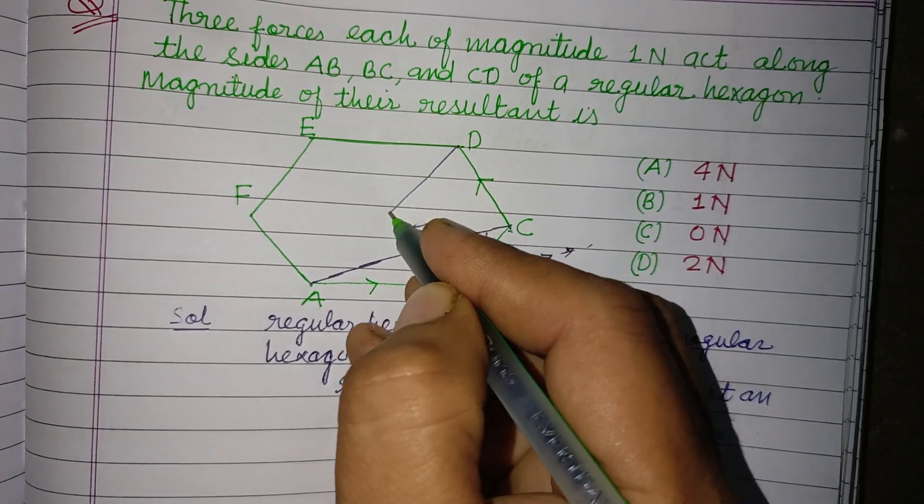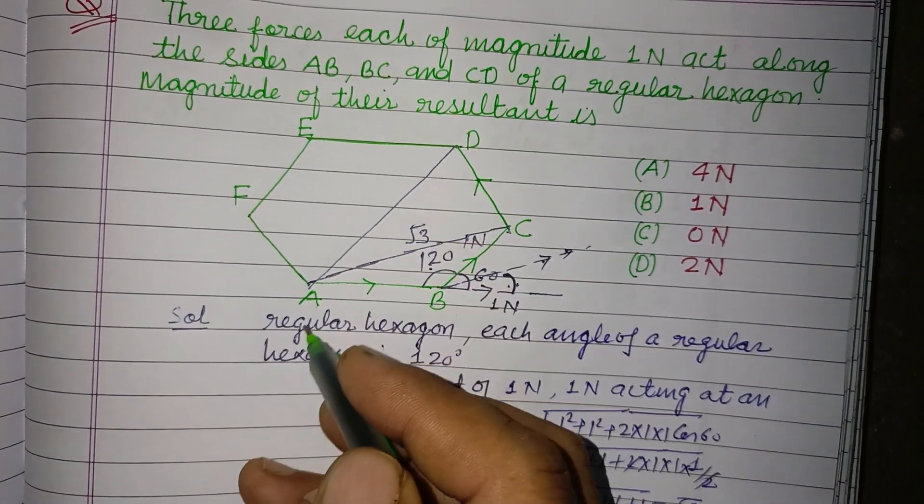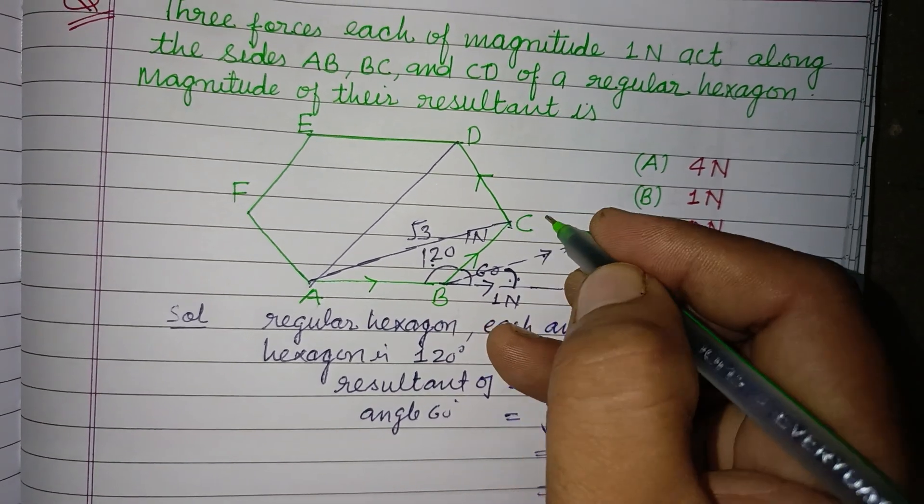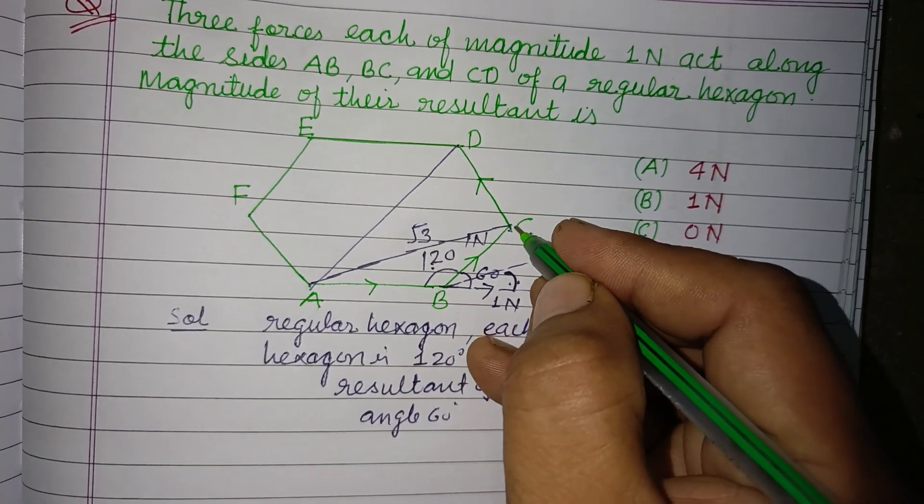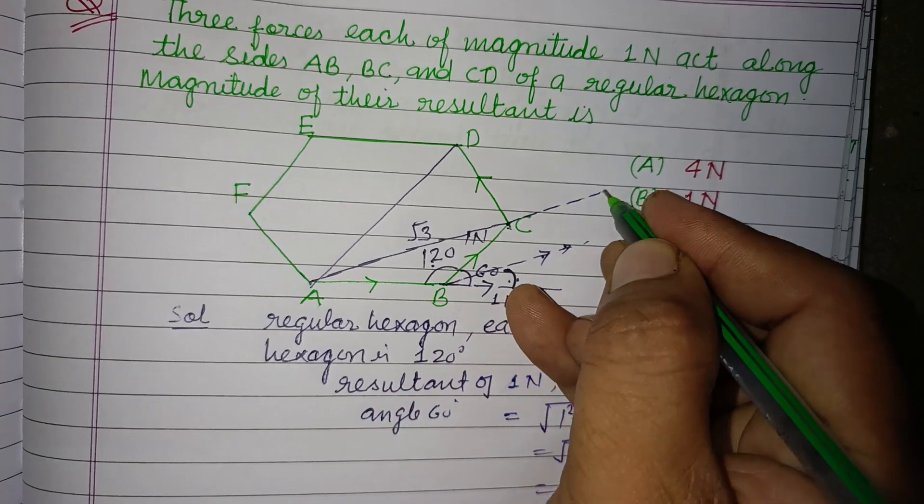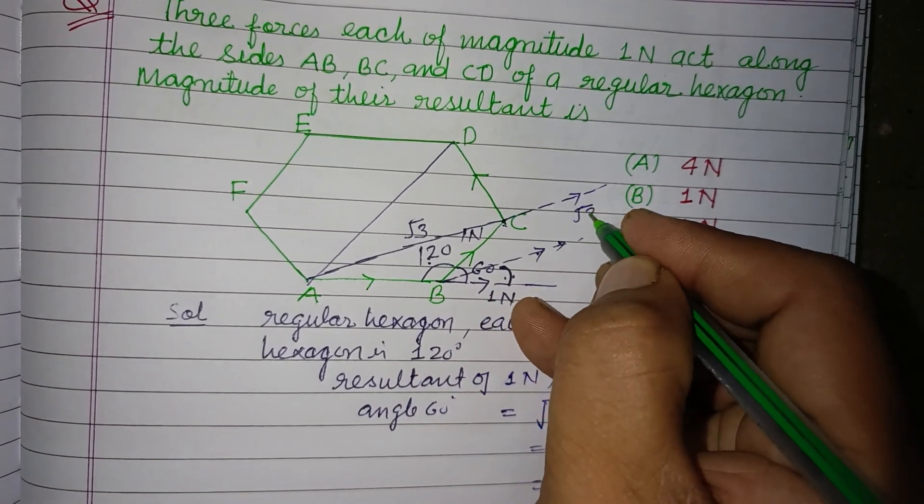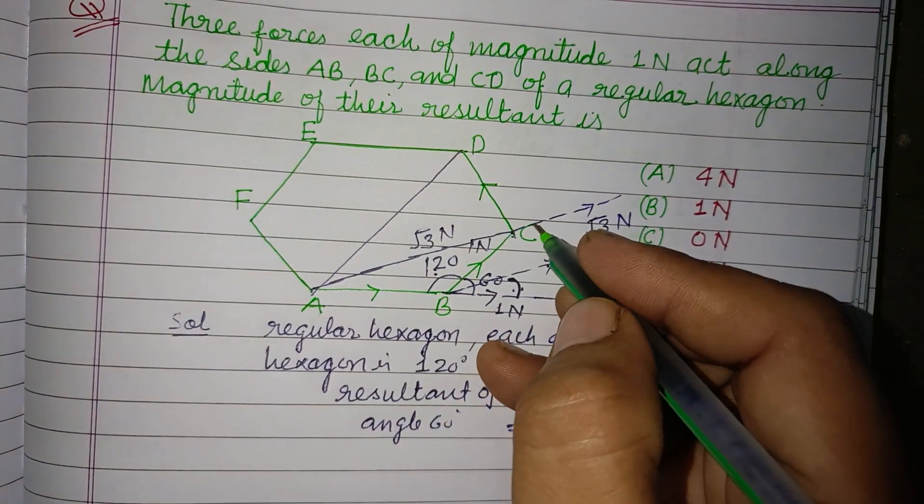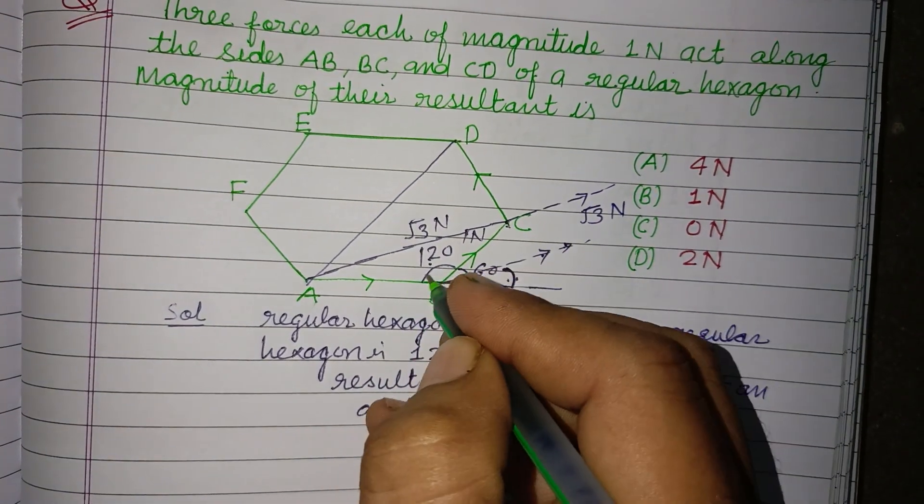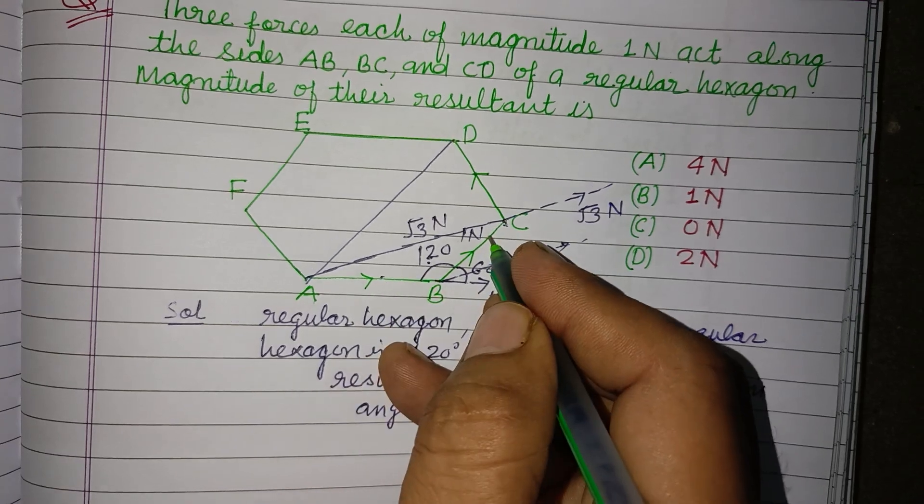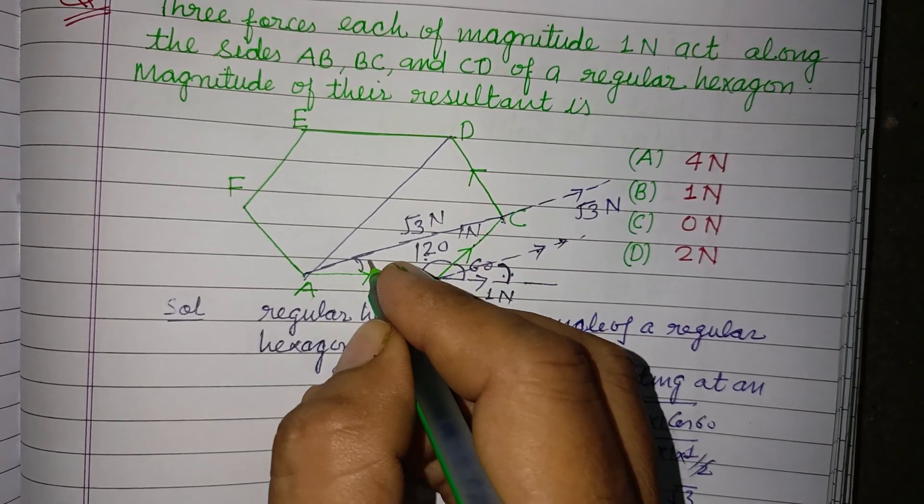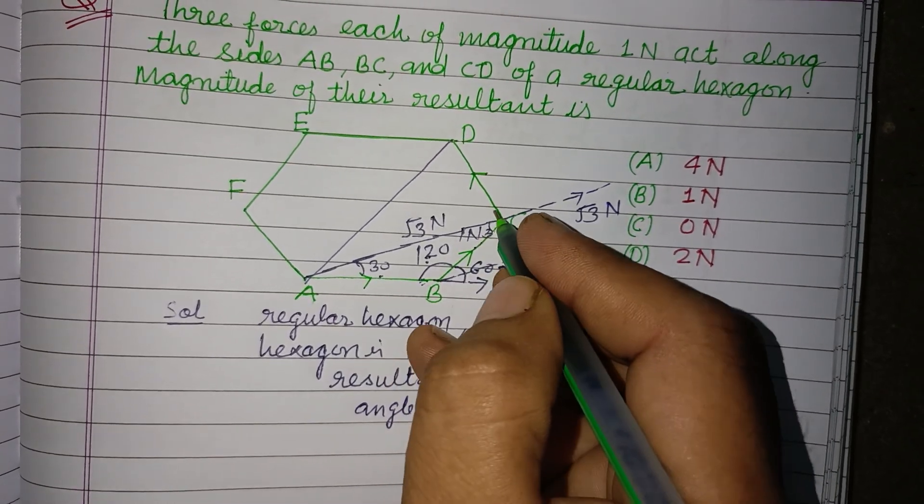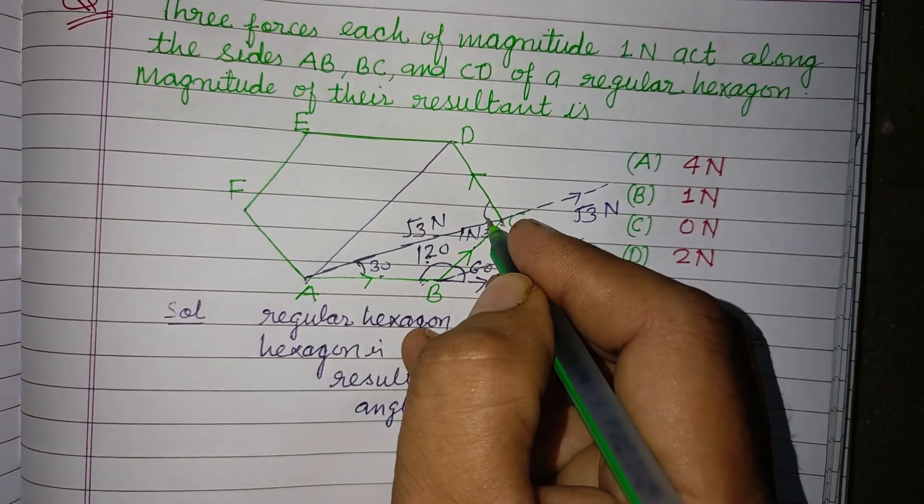Now we add this, which is the resultant of these forces and we increase this root 3 in this direction. So this is root 3 N. Now if this angle is 120, these sides are same of regular hexagon. So this will be 30 and this will be 30 and this is 30 and 120 minus 30, this is 90.